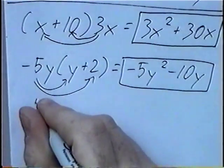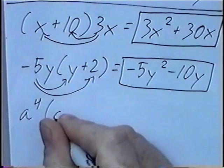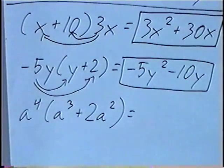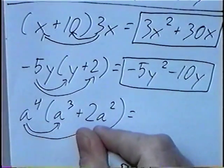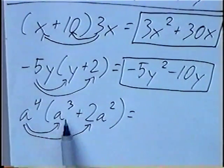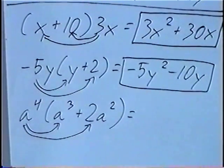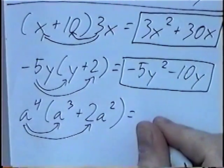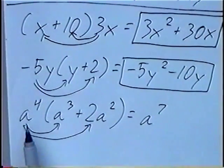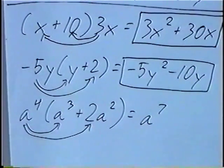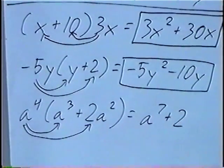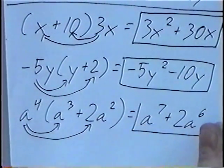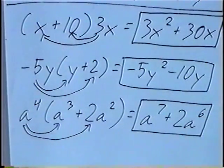Next question: a to the 4th power, and inside parentheses a to the 3rd power plus 2a to the 2nd power. Again multiplying the term outside by each term inside the parentheses. a to the 4th power times a to the 3rd power — if you remember from previous sections, when you multiply you add the exponents, so that gives a to the 7th. So the final answer is a to the 7th plus 2a to the 6th.